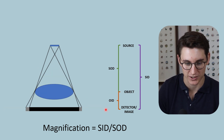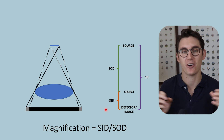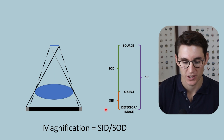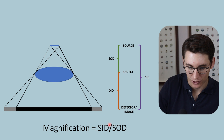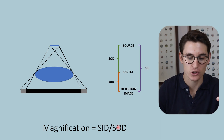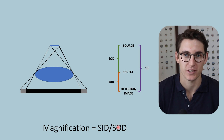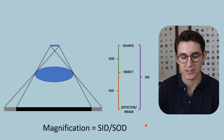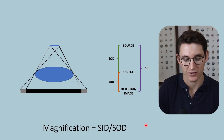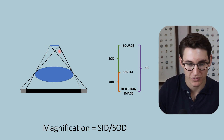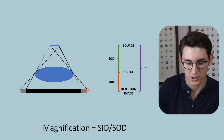This is a super common exam question: how can we decrease our magnification? We can increase our source to object distance, or we can decrease our source to image distance. Let's look at that other example — decreasing our source to image distance. As we bring that detector closer to our source, we decrease the magnification and we decrease the geometric blurring within our image. So we can see that magnification and geometric blurring are related: as magnification increases, geometric blurring also increases, and vice versa. But it's not the magnification itself that causes the geometric blurring — it's the focal spot.